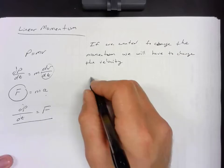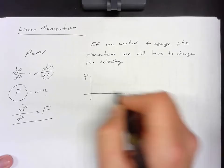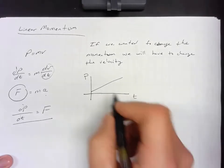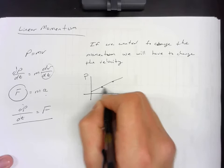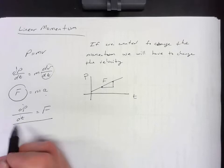And this form tells us that if we have a momentum with respect to time graph, that the slope is going to be force. Change the momentum over the change in time.